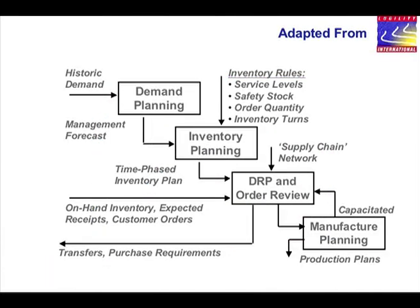This shows Agility International's mindset when it comes to stock control. Historic demand feeds into demand planning. Inventory rules feed into inventory planning. Service levels, safety stock, order quantity, and inventory terms are the variables. These feed into DRP and order review, where inputs into DRP are on-hand inventory, expected receipts, and customer orders. Outputs are stock transfers and purchase requirements. DRP then feeds into manufacturing, which feeds back a lead time into DRP.